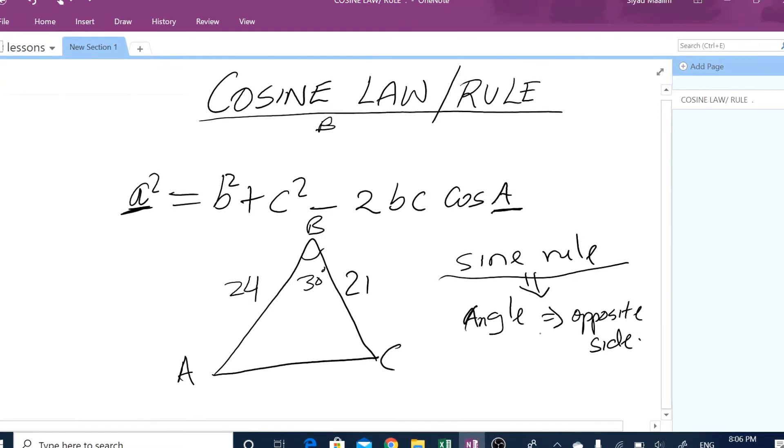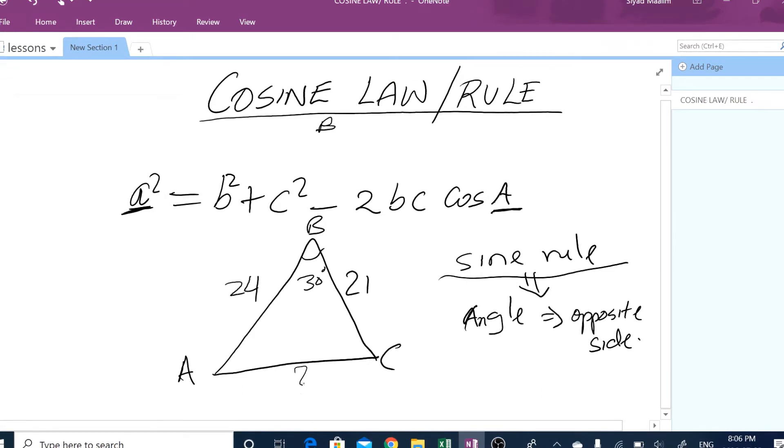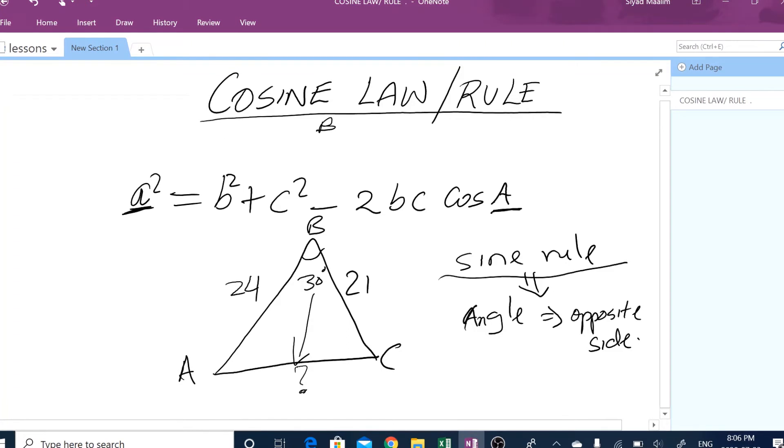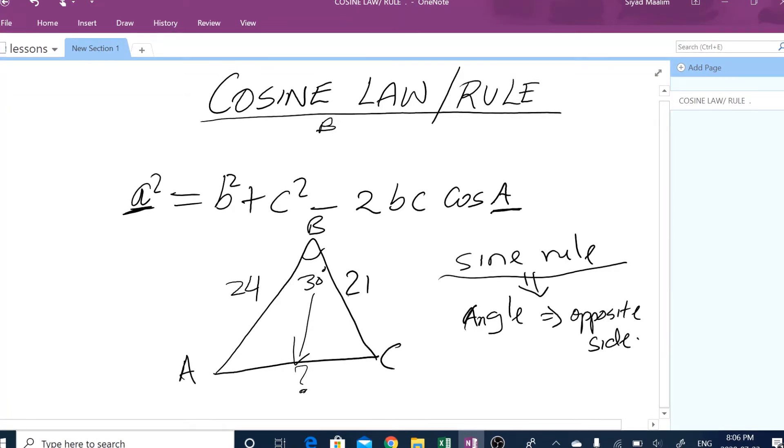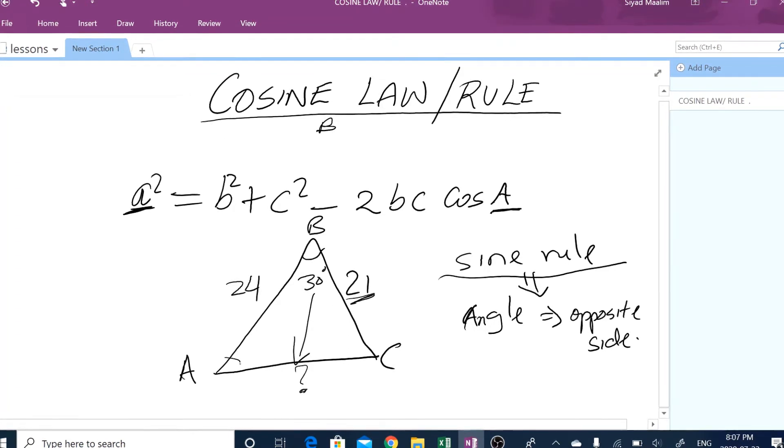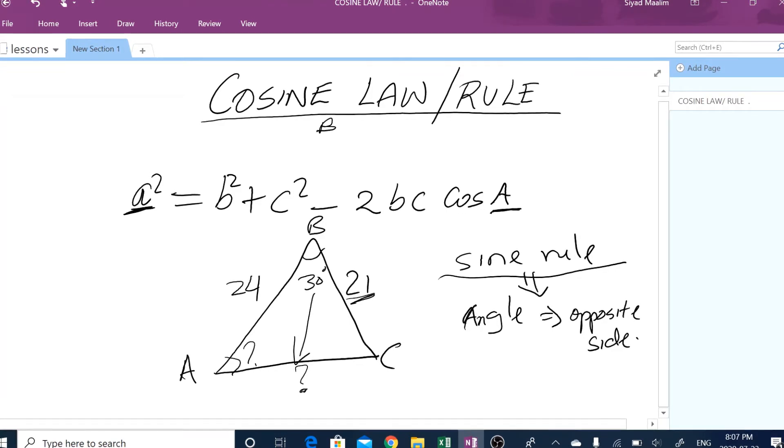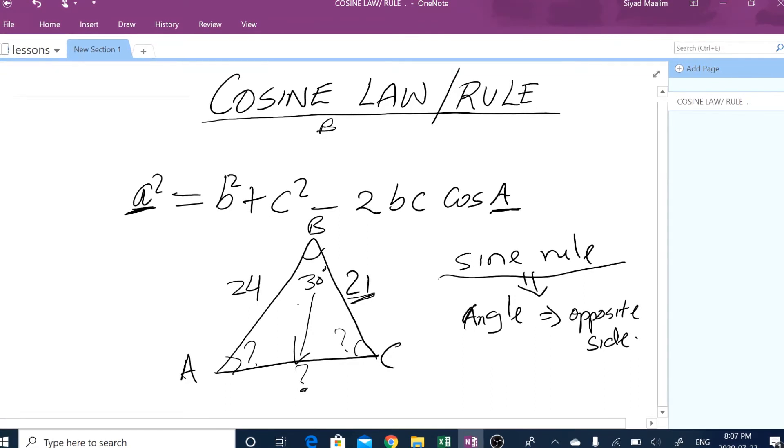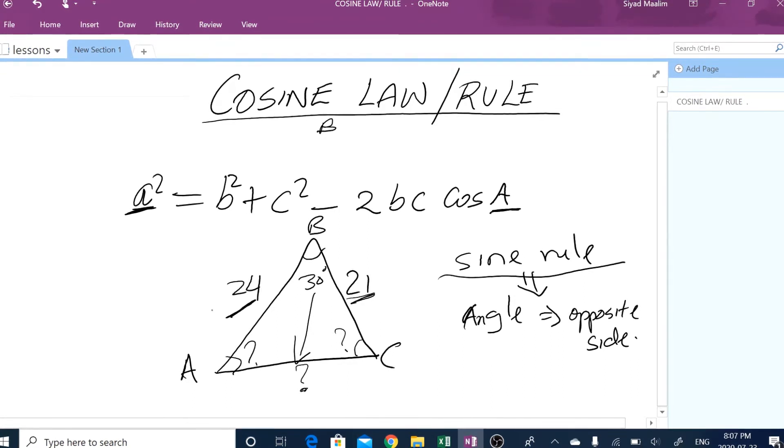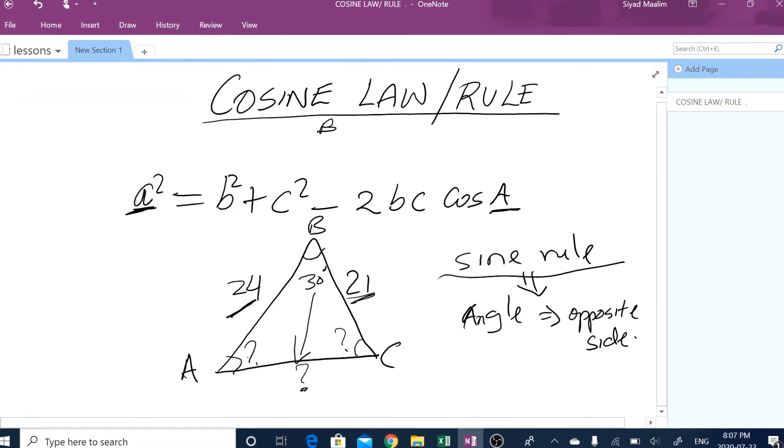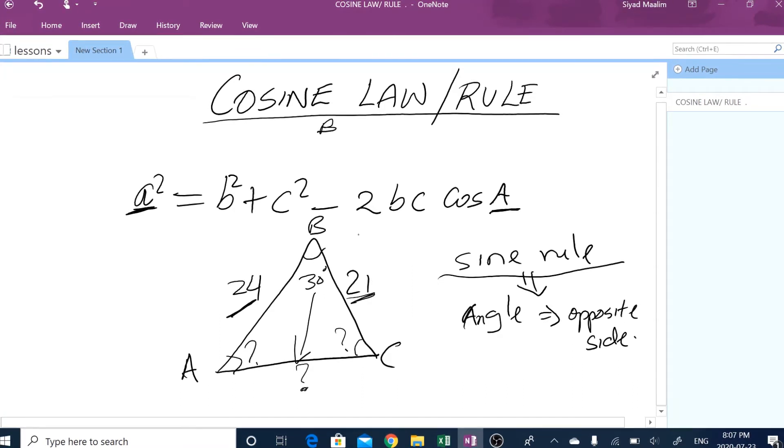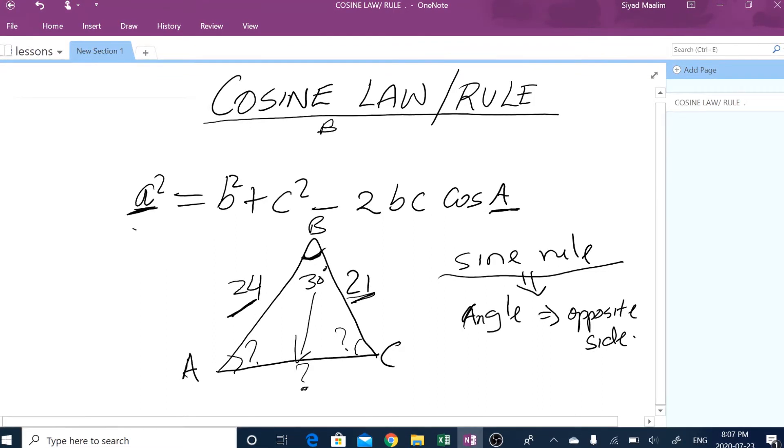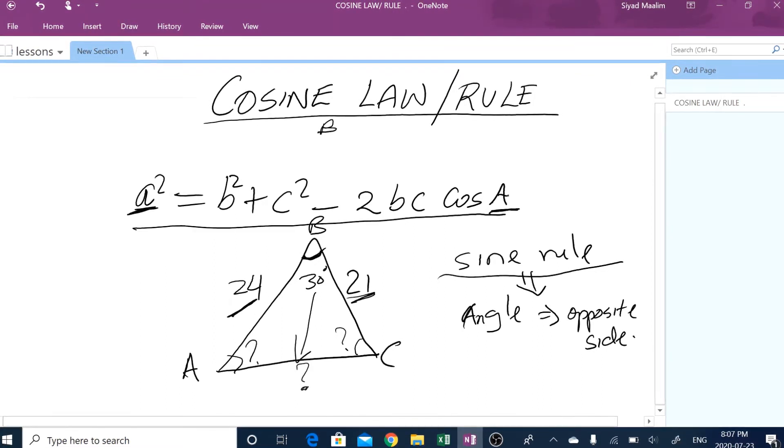In this case, we have an angle but we don't have its opposite side. For example, we don't have side b. We have side a here, but we don't have angle A. Similarly, we don't have angle C but we have side c. So whenever you have a triangle where you are given two sides and the angle in between those two sides, then you have to use cosine rule.